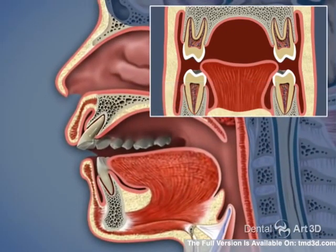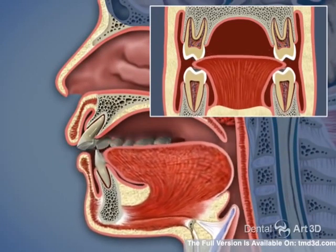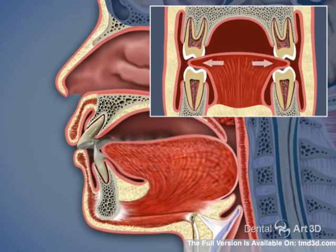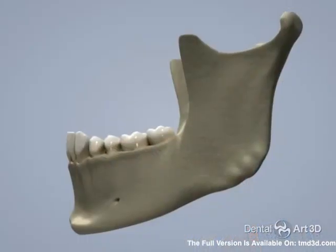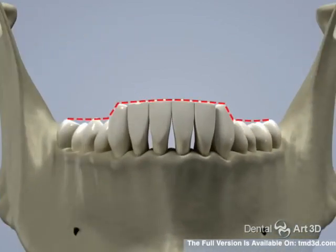This also produces an incorrect swallowing function. Upon swallowing, the tongue rests on the lateral teeth, hindering normal tooth eruption and causing a lateral tongue thrust. A constantly open mouth causes the incisors to over-erupt.